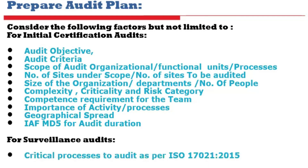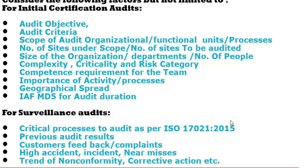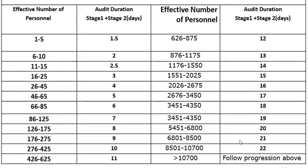For surveillance audits, critical processes have to be audited. Previous audit results also have to be reviewed, along with customer feedback and complaint areas. High accident and incident trends when doing safety or occupational health and safety audits, and the trend of non-conformities and corrective actions — these are all considered when making an audit plan.